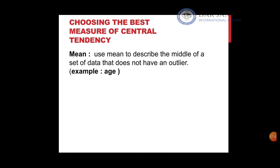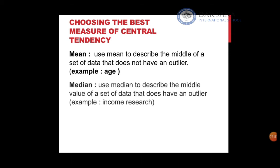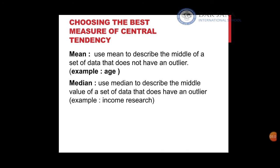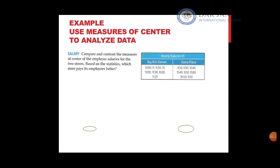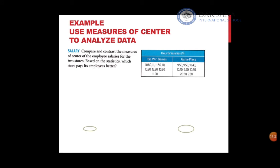It's our job to choose which is the best measure of central tendency. Mean is used to describe the middle of a set that does not have an outlier. Median is used to describe the middle value of a set that does have an outlier — whenever there is an outlier, we don't use the mean. Mode is used when data is not numeric or when choosing the most popular item, such as a favorite cereal.